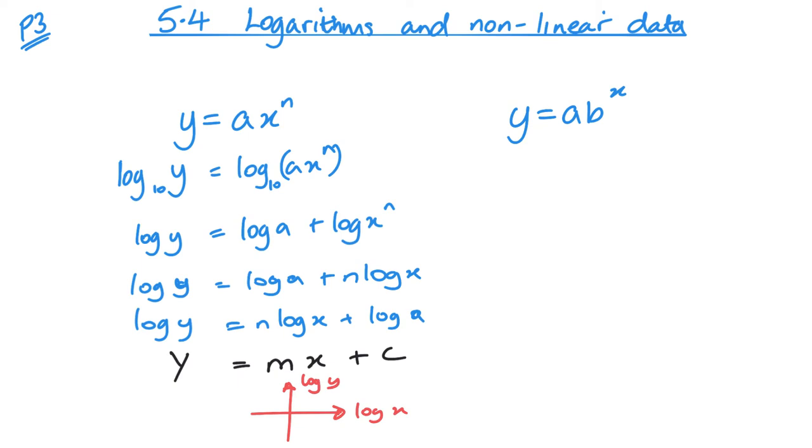Let's have a look at the second one: y equals ab to the power x. Again, I'm going to start off in the same way and take the logs of both sides, so log y equals log ab to the power x. And again, much like last time, I want to split this ab to the power x up. So a times b I can split up, so it's going to be log a plus log b to the power x. And then I'm going to bring that down using rules of logs again, so it's going to become x multiplied by log b.